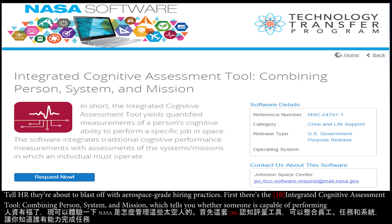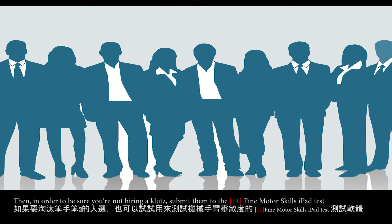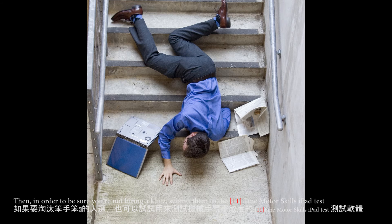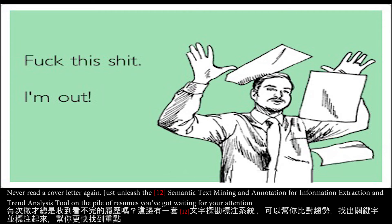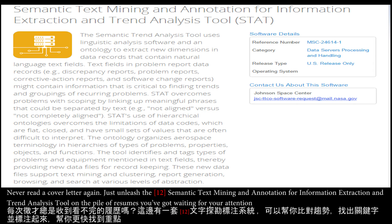For HR, there's the Integrated Cognitive Assessment Tool, combining person, system, and mission factors, which tells you whether someone is capable of performing a task. Then, to be sure you're not hiring a klutz, submit them to the Fine Motor Skills iPad test. Never read a cover letter again — just unleash the semantic text mining and annotation for information extraction and trend analysis tool on the pile of resumes you've got waiting for your attention.